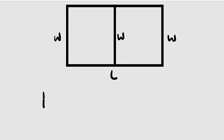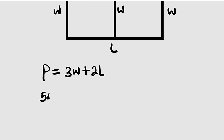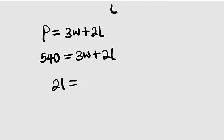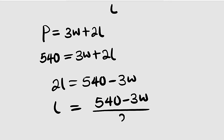So the perimeter P will be equal to 3w plus 2l. But P, which is 540, is given, so we have 540 equal to 3w plus 2l. Let us make l the subject. We have 2l equal to 540 minus 3w. We are going to divide both sides by 2. Finally, l is equal to (540 minus 3w) divided by 2.